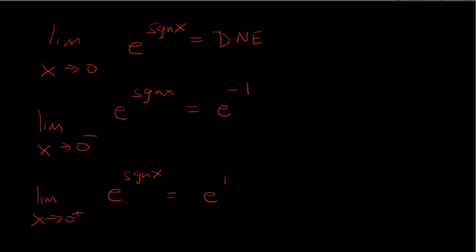What if instead I said the limit as x approaches 0 of e to the absolute value of sign of x? Does that change things? When I'm looking at the left-hand limit, I'll be taking the absolute value of negative 1, so that would just be e to the 1. And then from the right, if I take the absolute value of 1, it's just 1, so we get e. That changes my answer and makes the limit equal to e — just by putting in the absolute value.